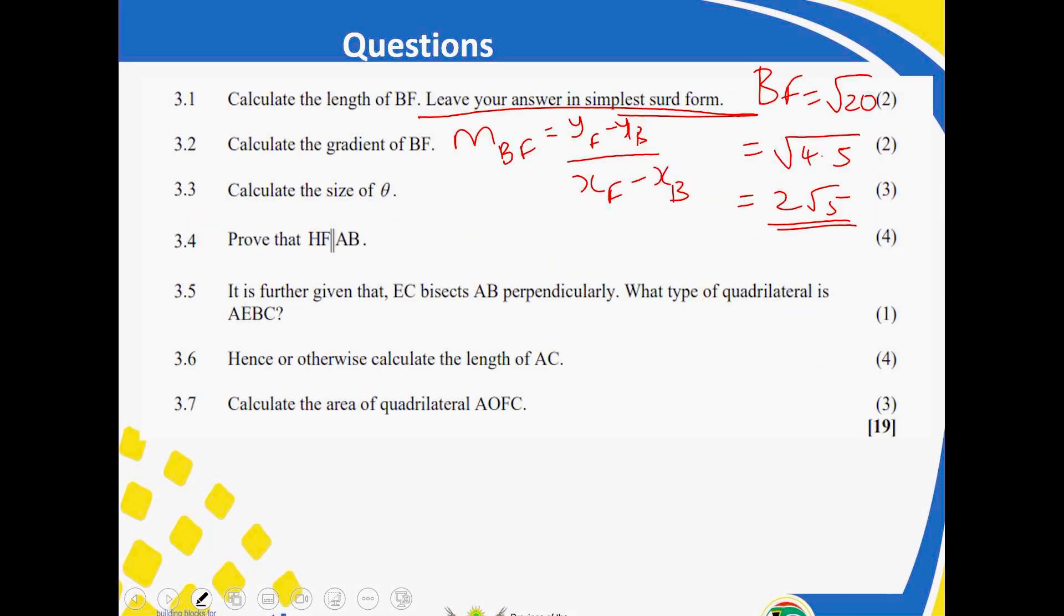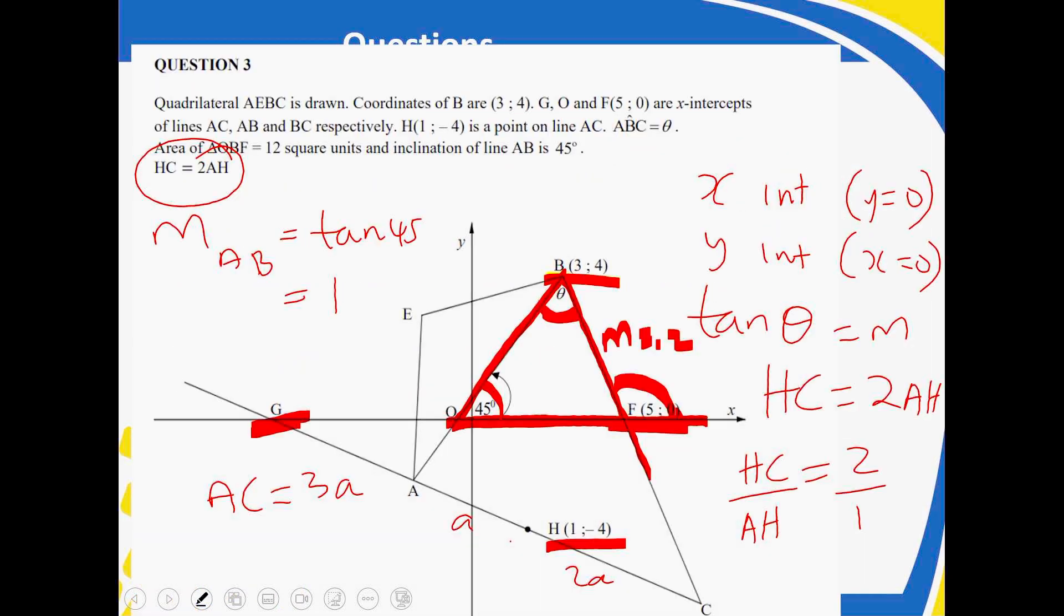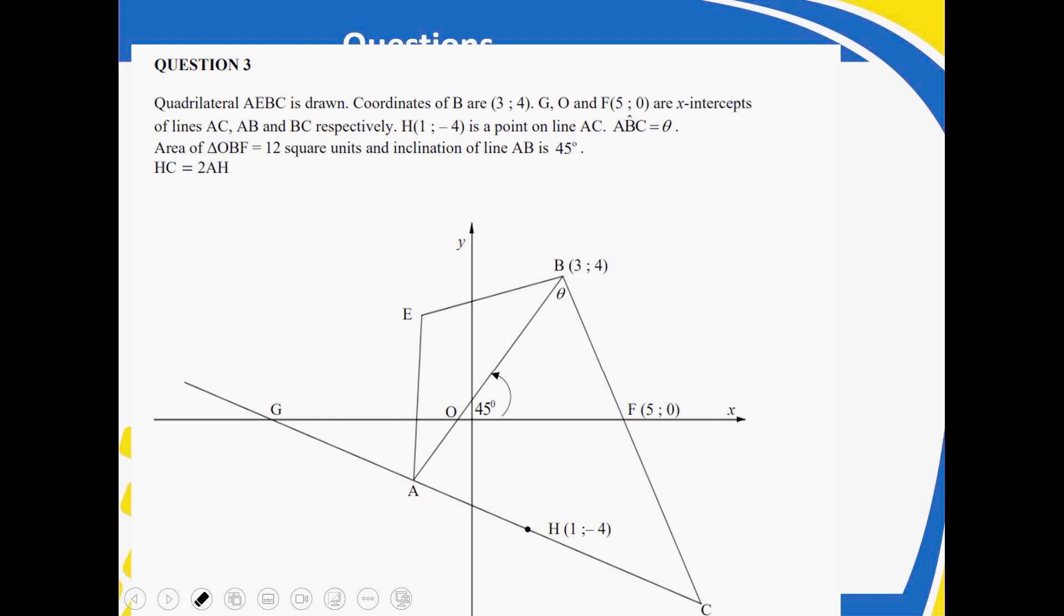So then prove that HF is parallel to AB. Now look at your HF. There is my HF. There is my AB. I already know the gradient of AB. So you calculate the gradient of HF. So once you calculate it, you will see that your M is 1. Your M there is 1. We already saw that. Then you can see that these two gradients are equal. So once they are equal, therefore, they are parallel. And that now takes us to this triangle being, if you are to apply our proportional theorem.